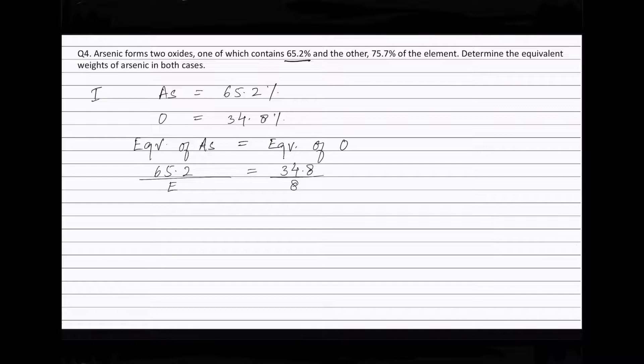Solving this equation, we get the equivalent weight of arsenic in this first oxide equal to 15.